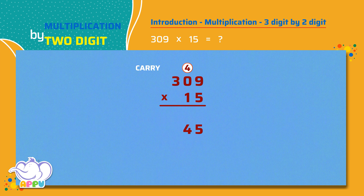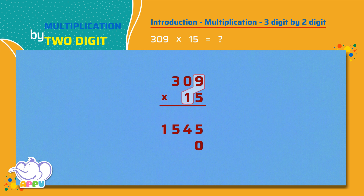Now we multiply the number in the hundreds place by five, which is three times five equals 15. We place zero in the ones place below five. We now multiply the number in the ones place by one, which is nine times one equals nine. We write this in tens place.